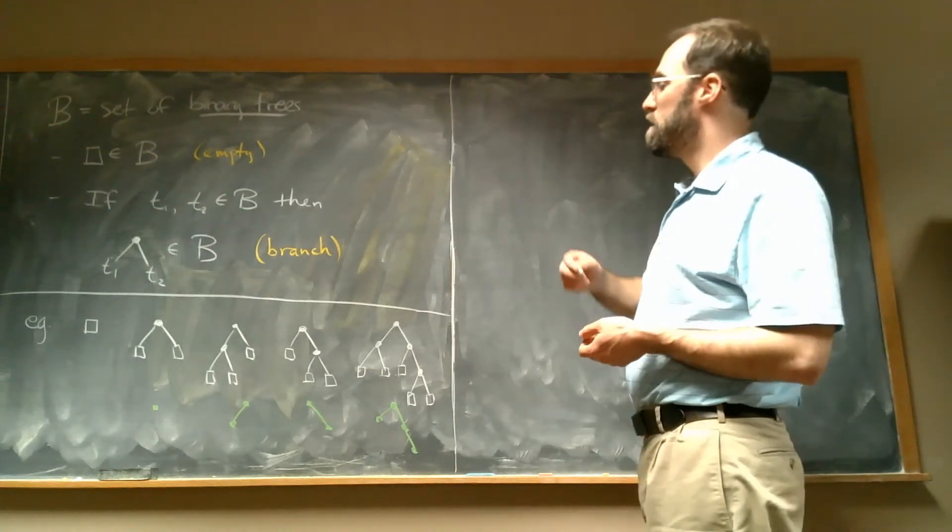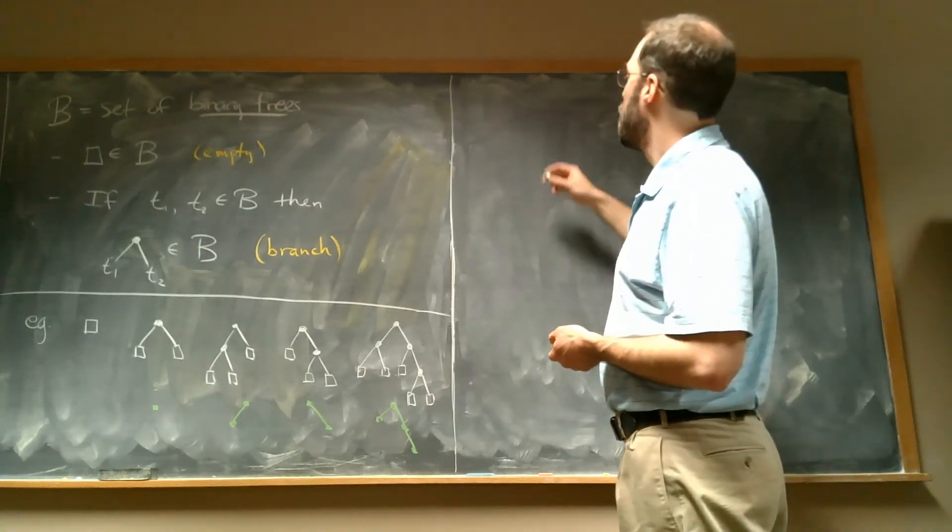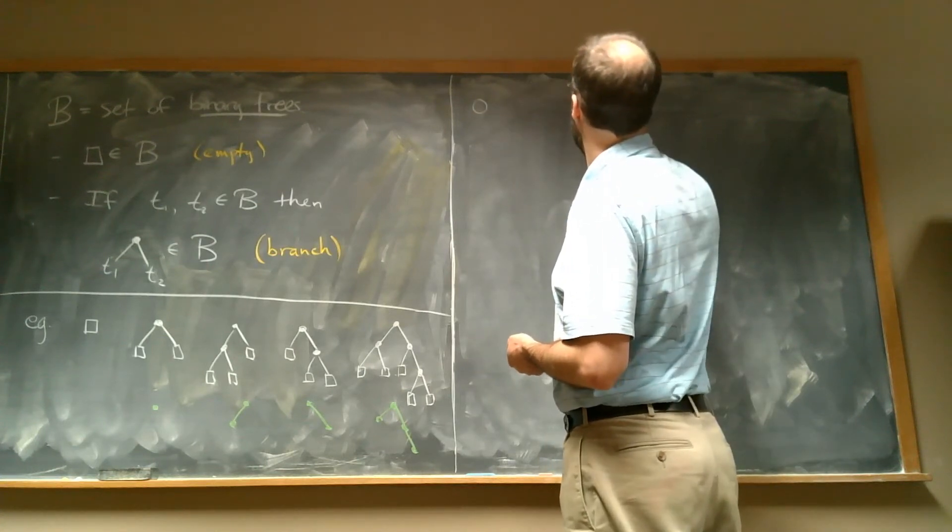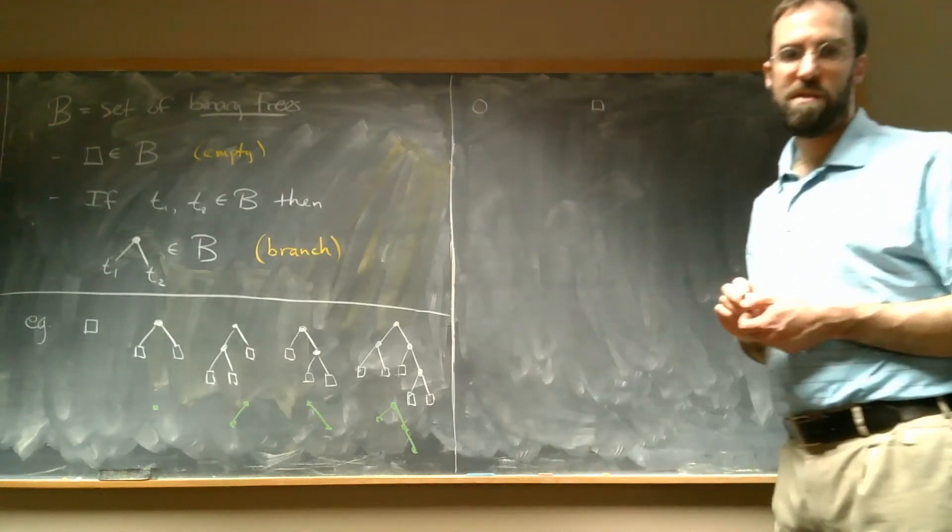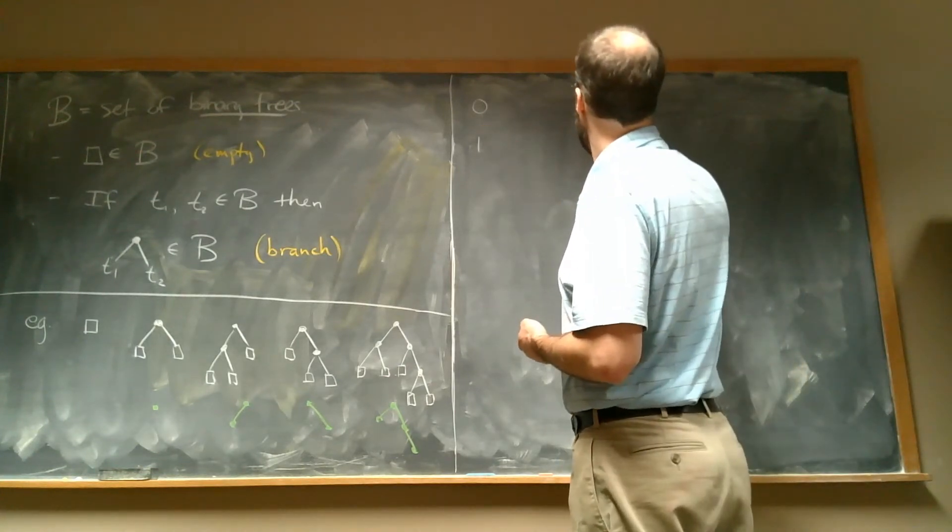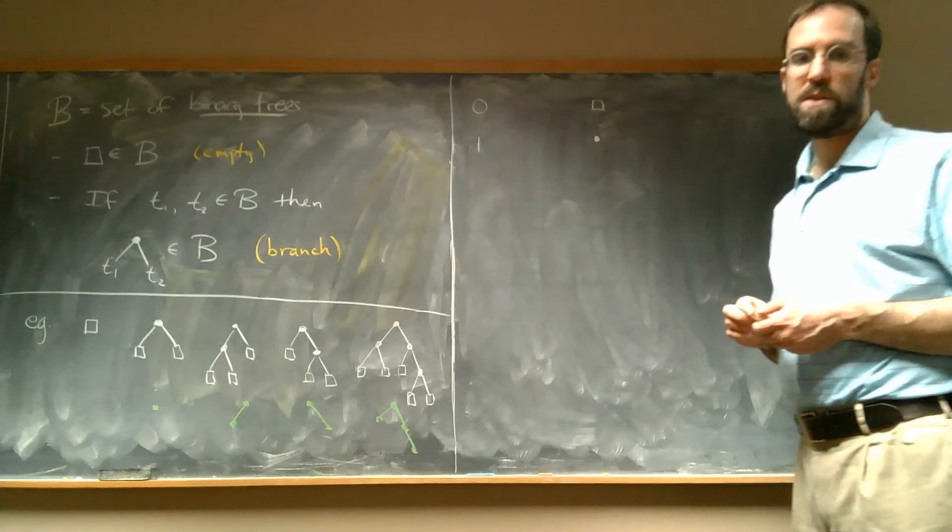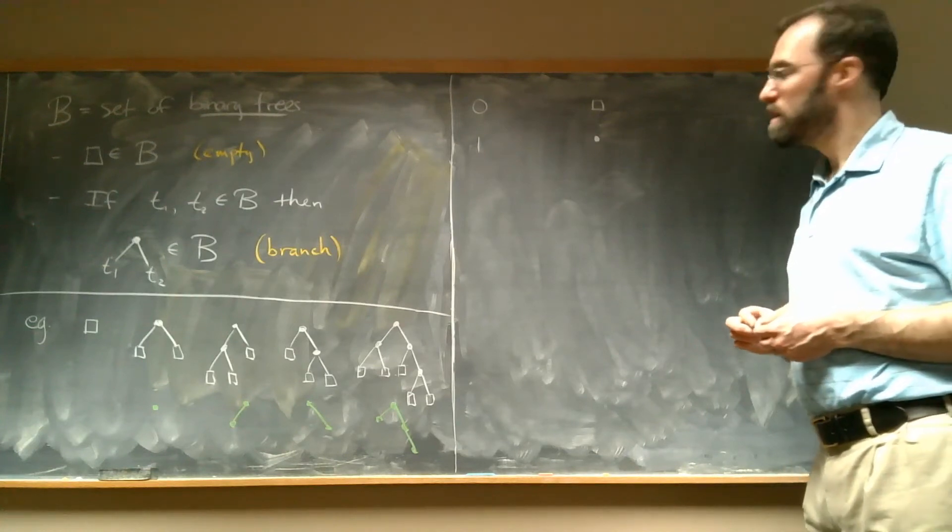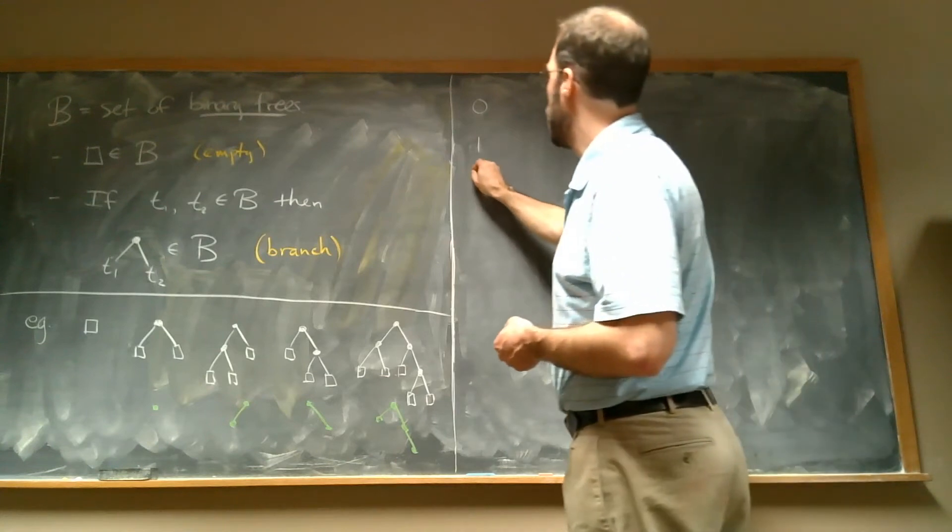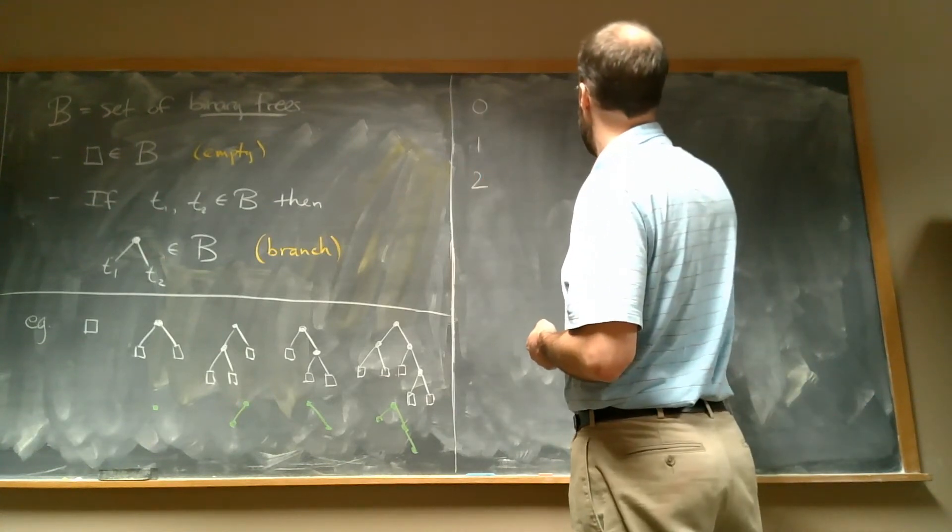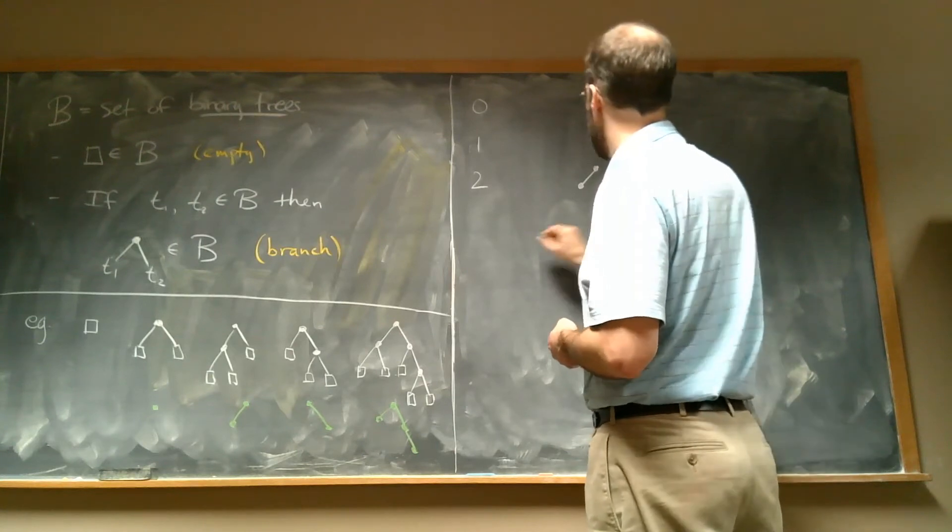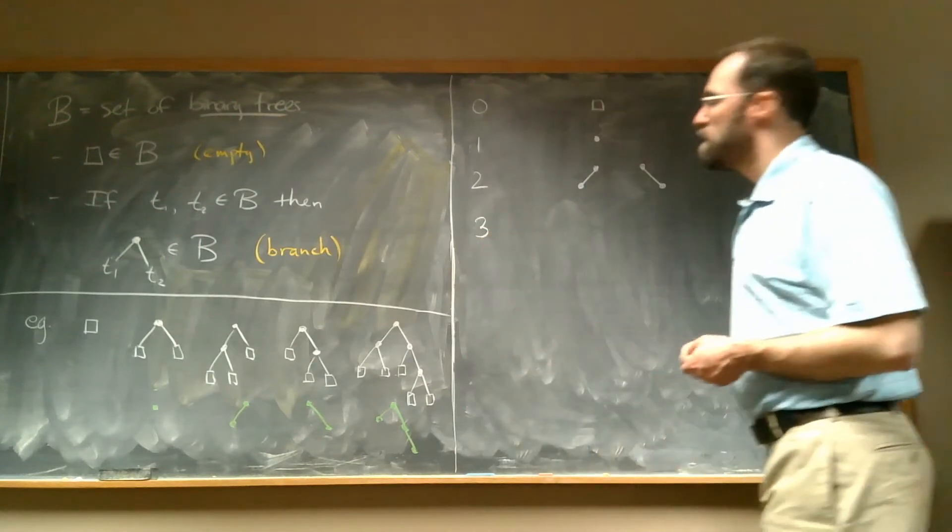So let's make a table up here. Here's my only tree with zero branches. Here's my only tree with one branch, which again I'm just going to draw as a dot. I'm not going to draw the empty trees coming off of it here. For two, we have two of them, there's this one and there's this one.